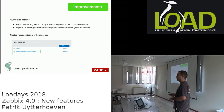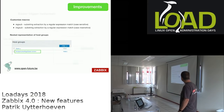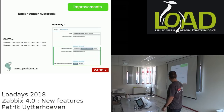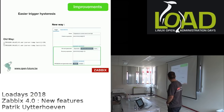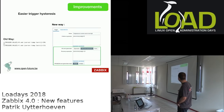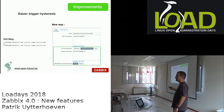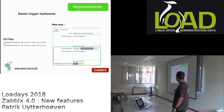Macros in 4.0 now support regular expressions, so you can retrieve a value, store it in a macro, and then apply a regular expression to extract a specific part of that macro for use in another item — rather than having to define a new macro or handle it in a script.